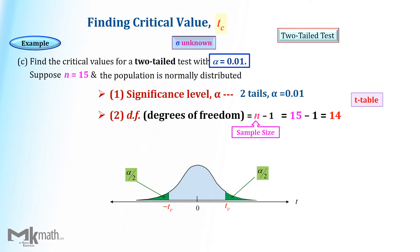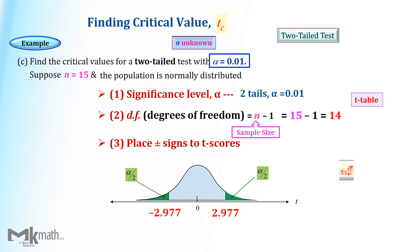Now we found the positive critical value 2.977. However, this is a two-tailed test, so the critical values must be both negative and positive. The t-critical values for this test are ±2.977.